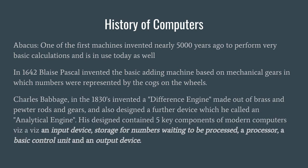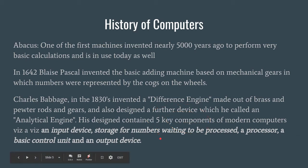Later on in the 1830s, after a long difference of time, Charles Babbage invented his difference engine, which was made out of brass and pewter rods and gears. Later on, he modified this machine further, and that machine came to be known as the analytical engine. His design contained five key components, and these five key components are those which are even used today in upgraded computers as well, because these were the basic or fundamental parts of a computer.